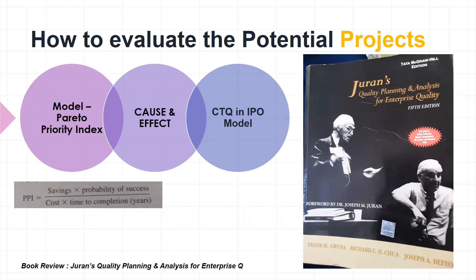There are three methodologies we are going to explore today. The first is called the Pareto Priority Index, or PPI — a wonderful model. The formula is: savings multiplied by probability of success, divided by cost and time to completion.